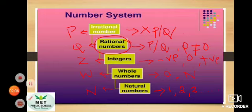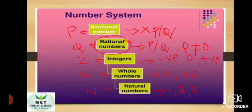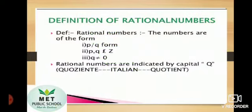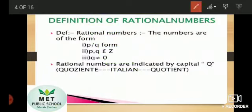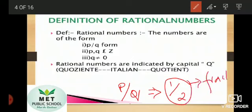Next, let us see the meaning of rational numbers. Rational numbers are the numbers which are written in the form of p/q, where p and q are integers. You can put any number in the place of p and q — for example, 1/2. Now you may get confusion between rational numbers and fraction numbers, because rational numbers are also written in terms of p/q, and 1/2 is also called a fraction number.